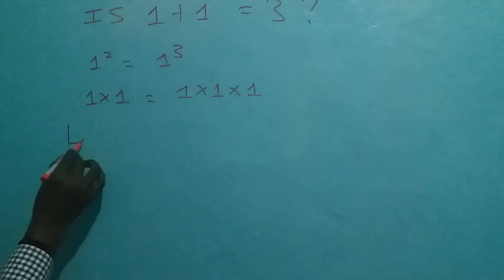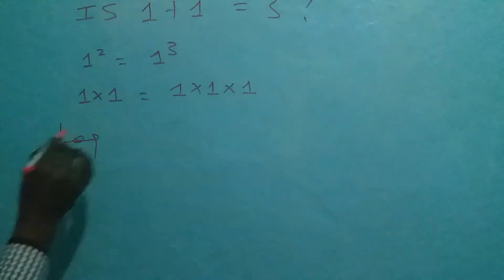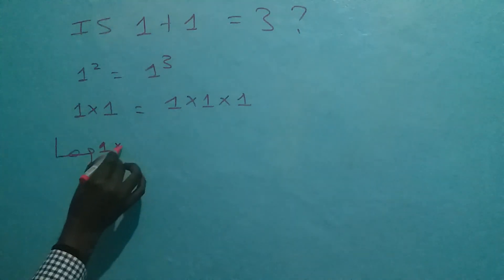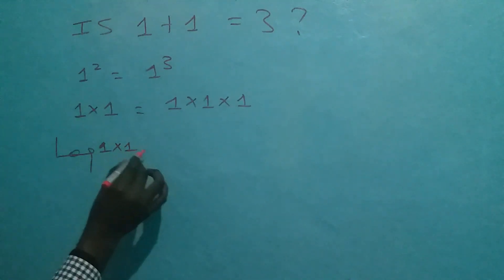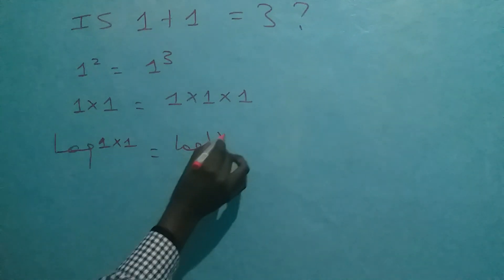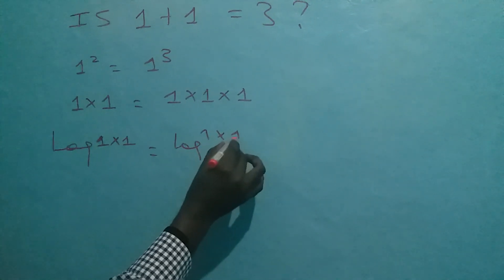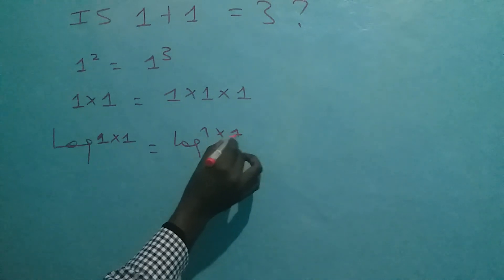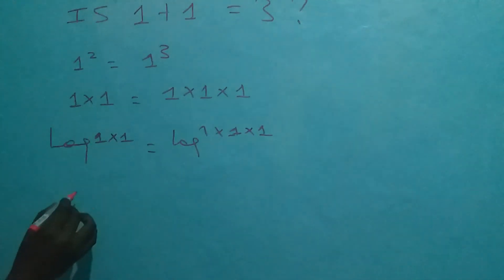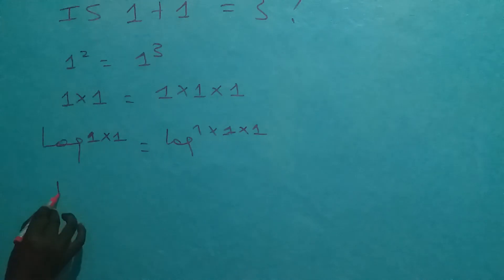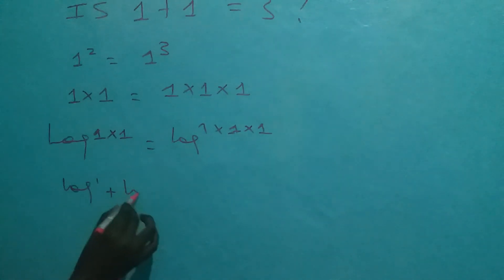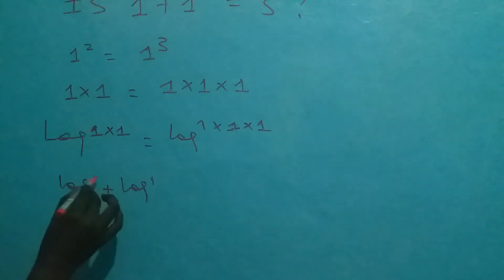Introducing the logarithm, we have logarithm of 1 times 1 equals logarithm of 1 times 1 times 1. By the property of logarithms, this becomes logarithm of 1 plus logarithm of 1.